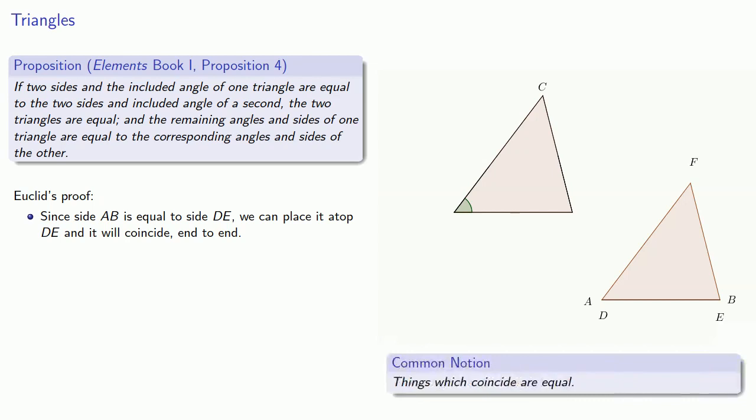And that's because of our common notion, things which coincide are equal. Likewise, AC could be placed atop DF, and angle BAC is equal to angle EDF. And that means the angles and the sides coincide, they can be placed right on top of each other.